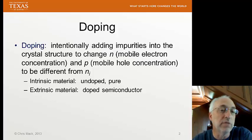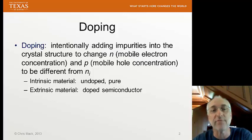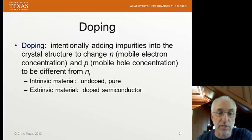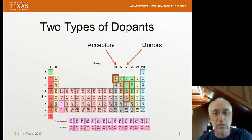The level of the unintentional impurities is so small as to not have a major impact on the behavior of that material. We call it intrinsic semiconductors. Extrinsic material is doped semiconductor.